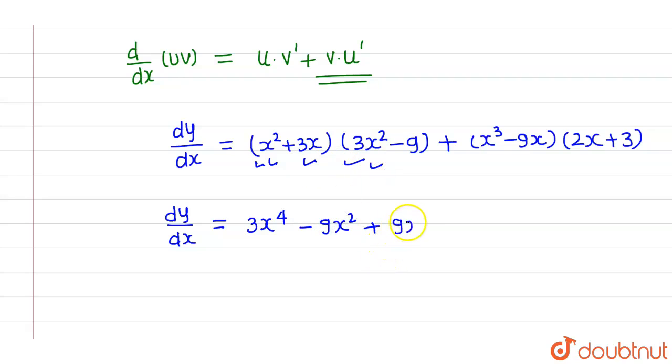plus when you multiply 3x with 3x square, this will come out to be 9x cube minus 27x plus this multiplied by this is nothing but 2x raised to power 4. This multiplied by this is nothing but plus 3x cube. Okay, this multiplied by this is nothing but minus 18x square and this multiplied by this is nothing but minus 27x.